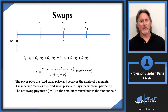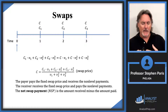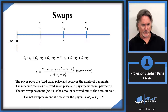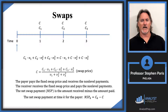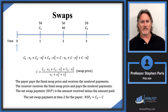We have an idea called the net swap payment — it's the amount received minus the amount paid. It's very practical to talk about. Let's look at a specific time period — let's look at time two. At time two, let's say the varying payment is 40, and we were swapping for a level set of payments that were all 50. From the payer's perspective, the payer pays the fixed price and receives the non-level payments.